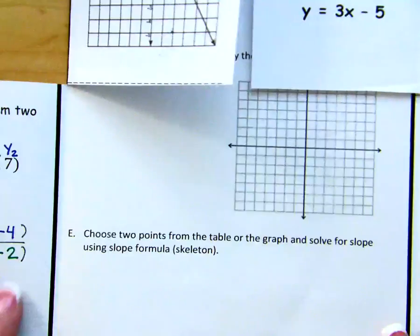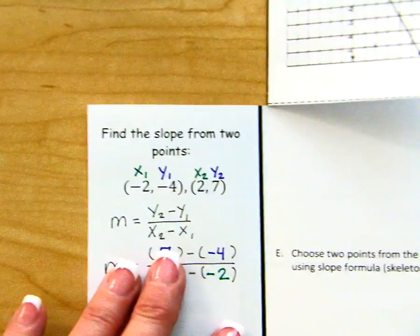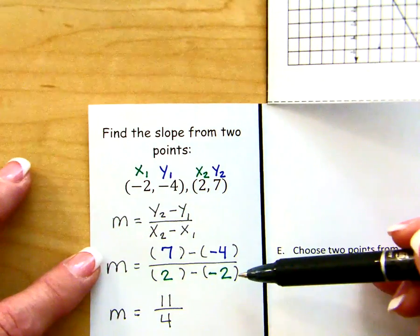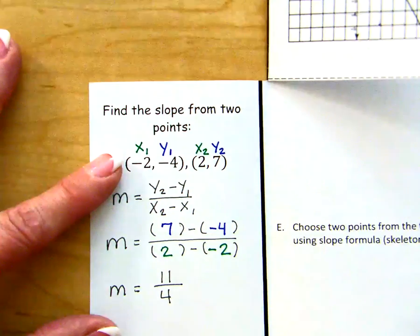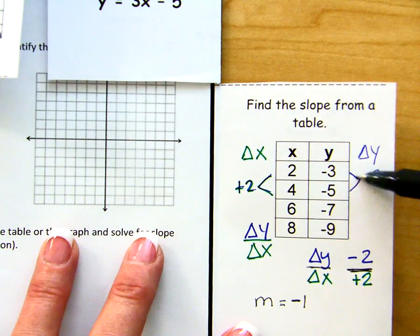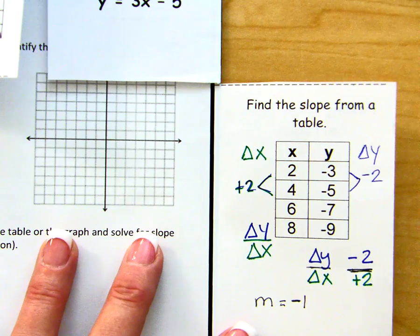The other thing we could do is recognize that you have two points here, and we could then just use the slope formula and identify those values, put them in there, and simplify.